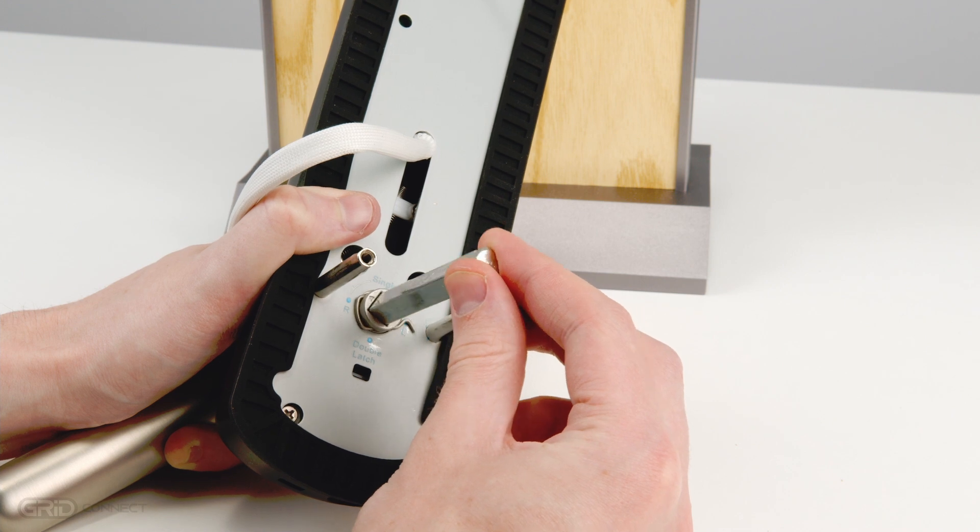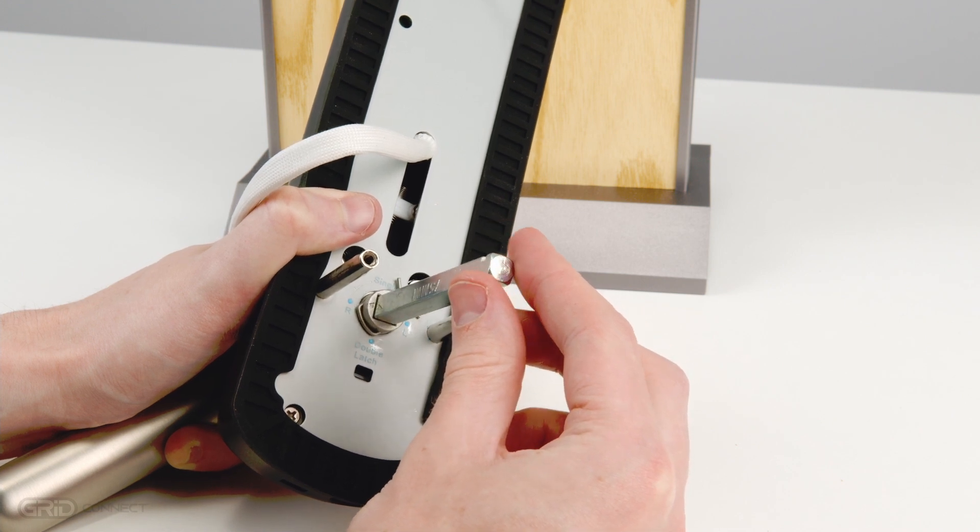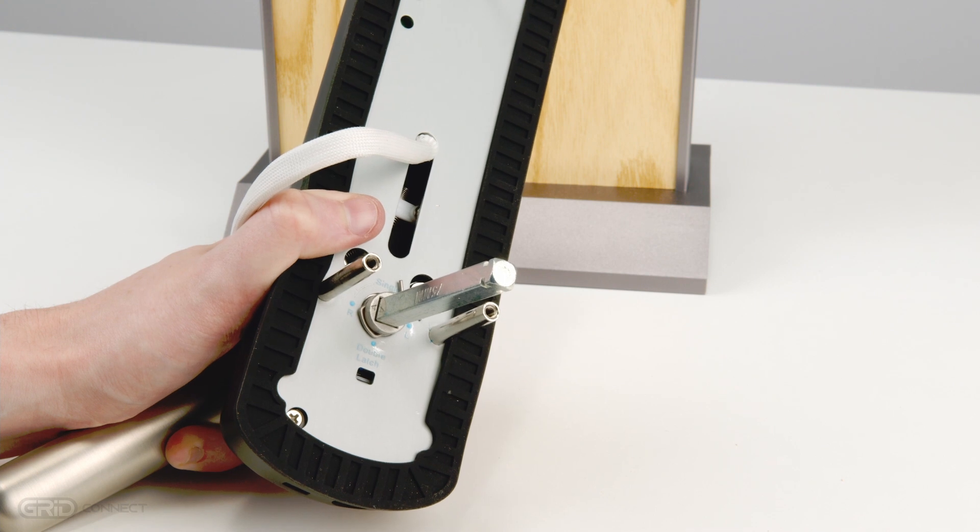There is a small arrow next to the spindle on the back of the front panel. Rotate the spindle so that it points at R for right hinge doors and L for left hinge doors.